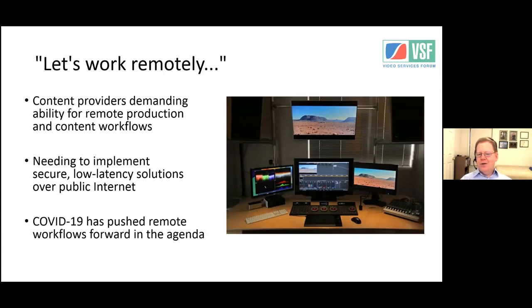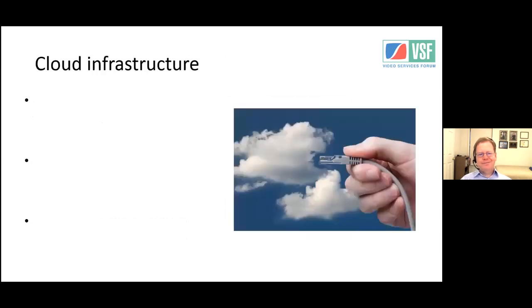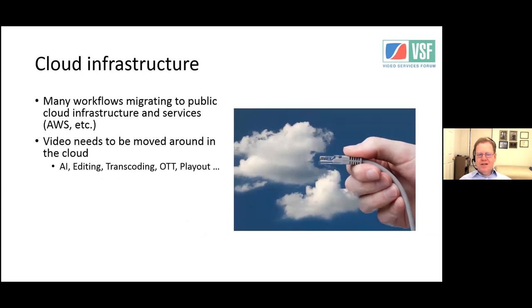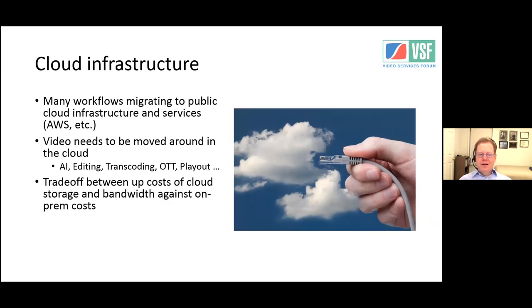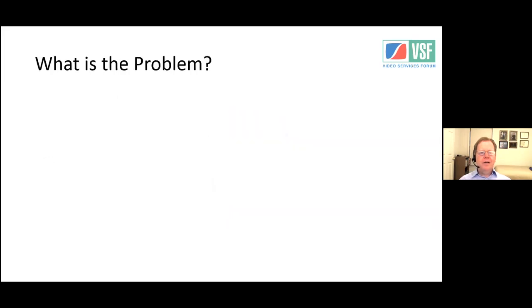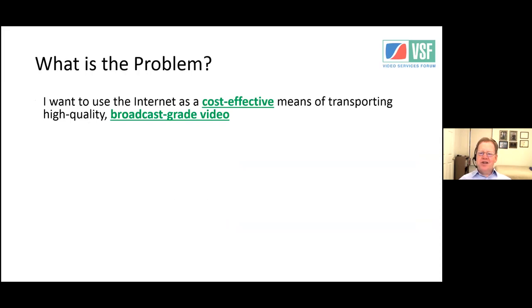Remote working is here to stay — there are efficiencies and cost benefits, and we need to find ways to do it more effectively. Cloud infrastructure is also a major factor. Many workflows are migrating to public cloud infrastructure and services including AWS. Video needs to be moved around the cloud for editing, transcoding, over-the-top, and playout. There are trade-offs between upfront costs and on-premises costs, and questions about integrating existing services and equipment with cloud services.